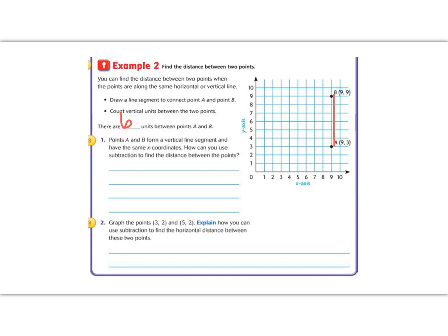Question one. Points A and B on a vertical line segment have the same X coordinates. How could you use subtraction to find the difference between the points? So instead of counting, they want to ask us how would we find the difference using subtraction? Well, I know that they both have on the X axis the number nine. And nine minus nine doesn't do anything for me. But if I look at the Y axis, then I have three and nine. So I'm going to use the Y axis to subtract. Remember, bigger numbers go first. Nine minus three gives us six, which is what we counted as well. So we can use subtraction instead of counting.